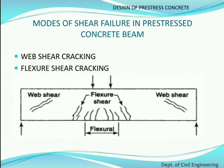Shear failure in prestress concrete beams is caused by two types. The first category is web shear cracking and the second category is flexural shear cracking. As we can see in the figure, web shear generally originates from the supports; this type is independent of flexure and is mainly caused by shear force at the supports. Flexural shear cracks originate from the center portion of the beam where bending forces dominate, so these cracks are affected by both flexure and shear.